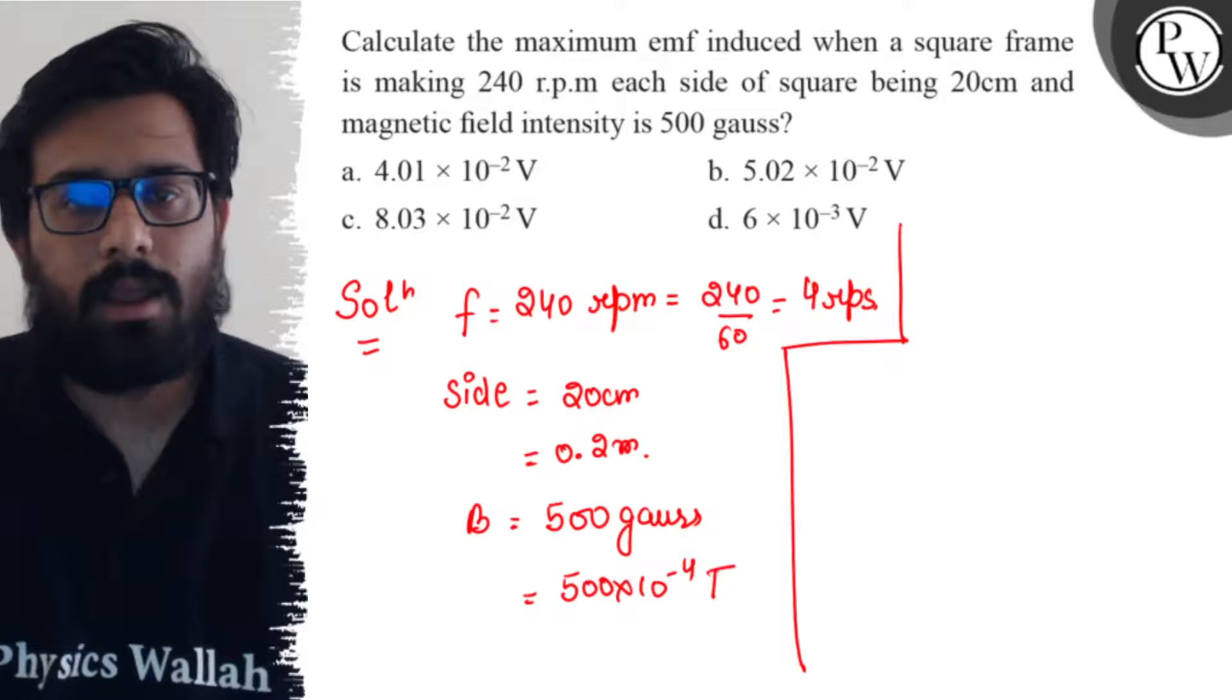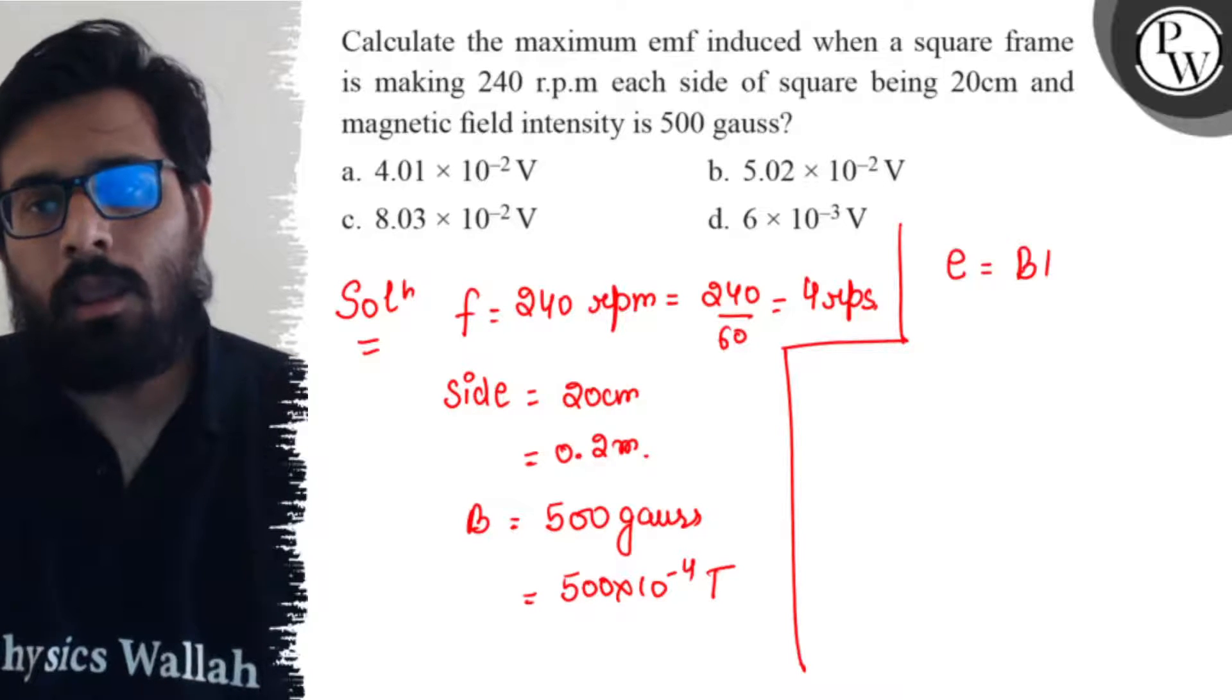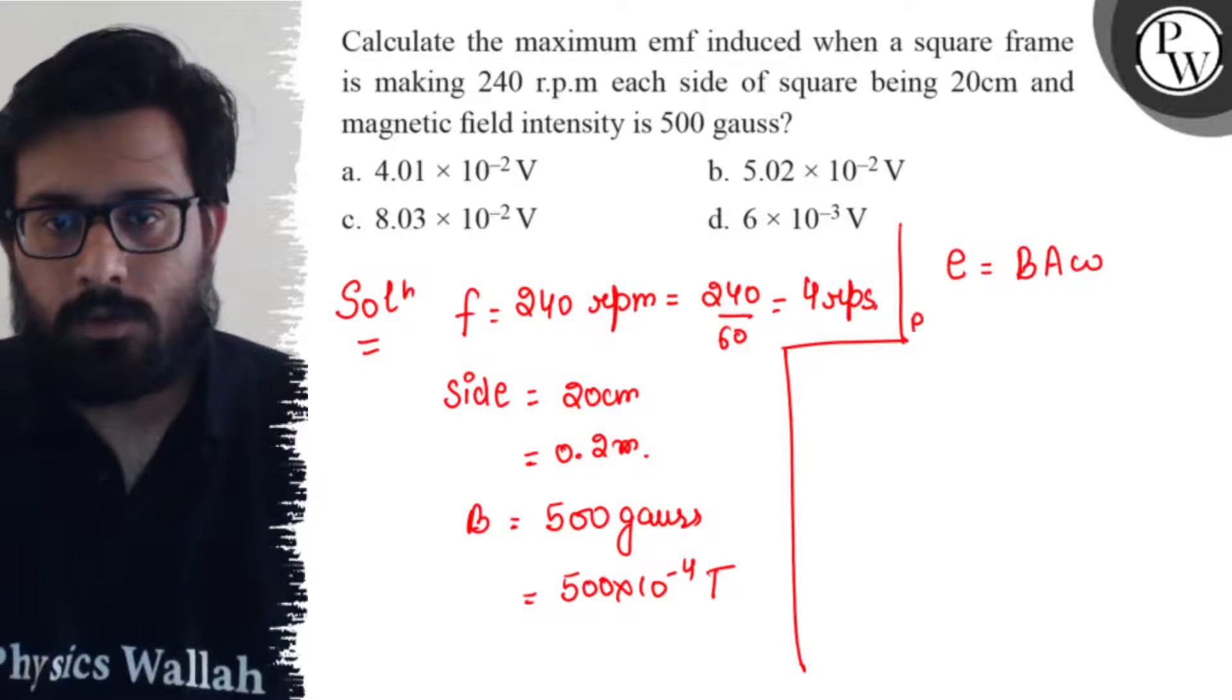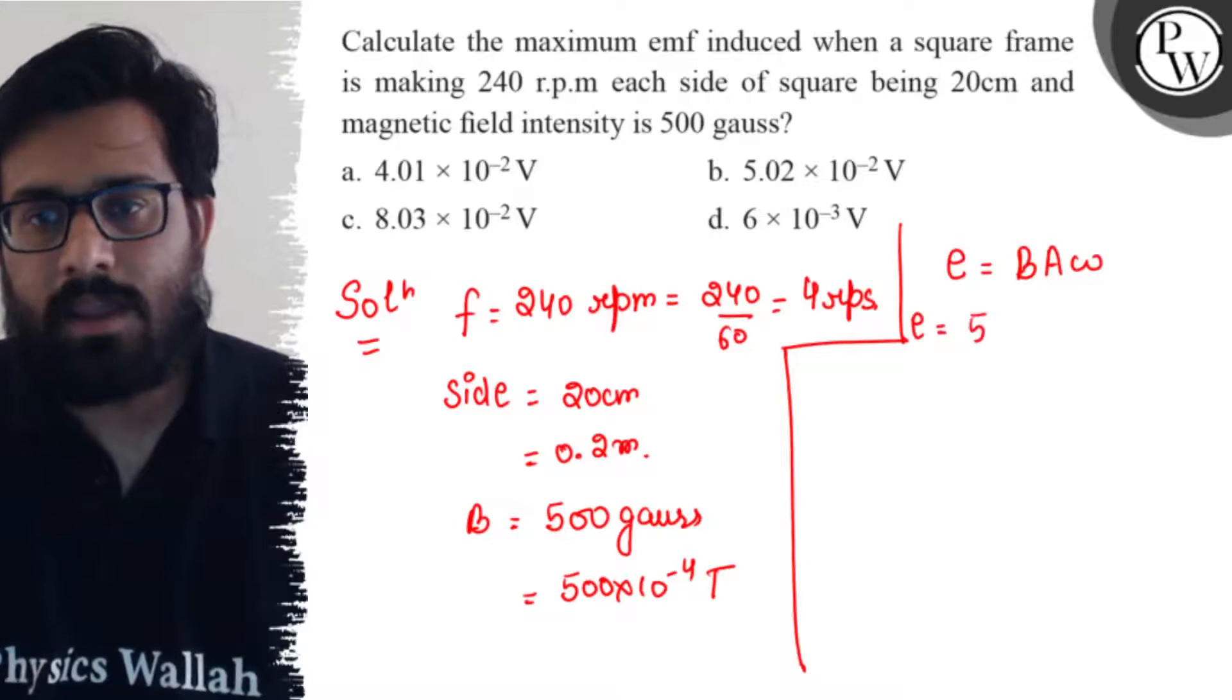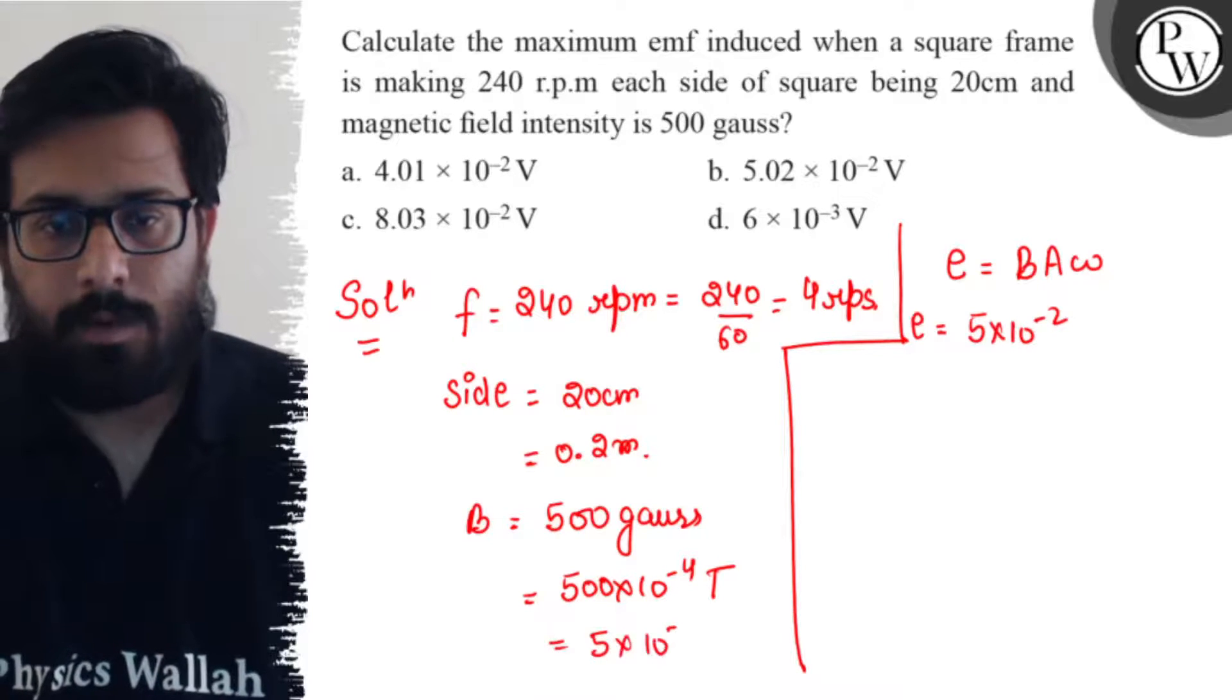we have the formula that the induced emf e is equal to BAω. So e is equal to B is 5 × 10^-2. This comes to be 5 × 10^-2.